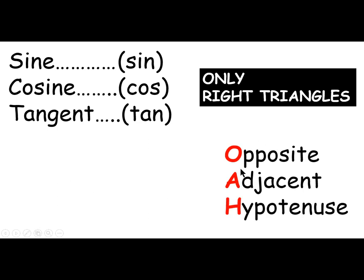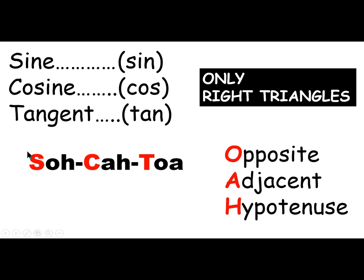We're also going to have to know how to label our triangle using three letters — O, A, and H: opposite, adjacent, and hypotenuse. Those are the three sides of every triangle. And the word that ties the whole thing together is SOHCAHTOA — a nonsense word whose letters tie sine (S), cosine (C), and tangent (T) to the sides of the triangle: O, A, and H. SOH, CAH, TOA — those are the parts of SOHCAHTOA.